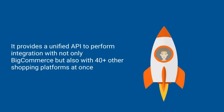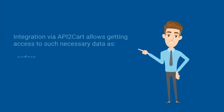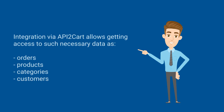It provides a unified API to perform integration with not only BigCommerce but also with 40 plus other shopping platforms at once. Integration via API2Cart allows getting access to such necessary data as orders, products, categories, and customers.